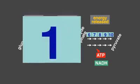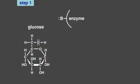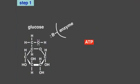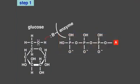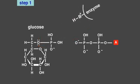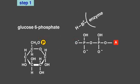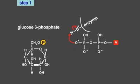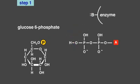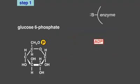In the first step, the enzyme hexokinase uses ATP to phosphorylate glucose. This investment of energy primes glucose for energy-releasing reactions later in glycolysis. The resulting molecule is glucose-6-phosphate. ADP is released. This first step of glycolysis is irreversible.